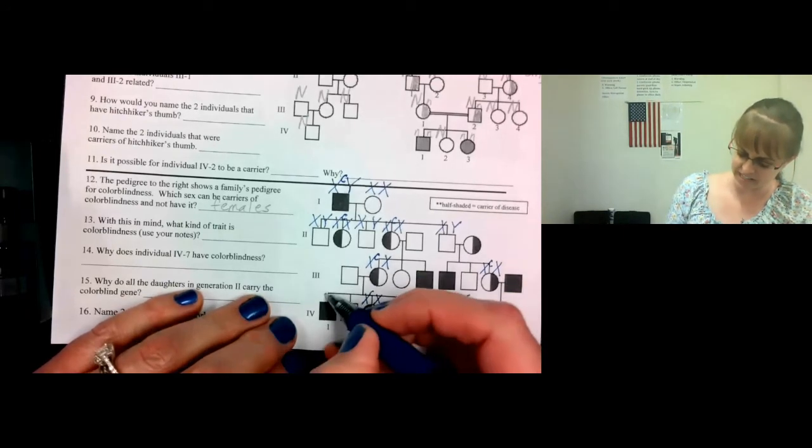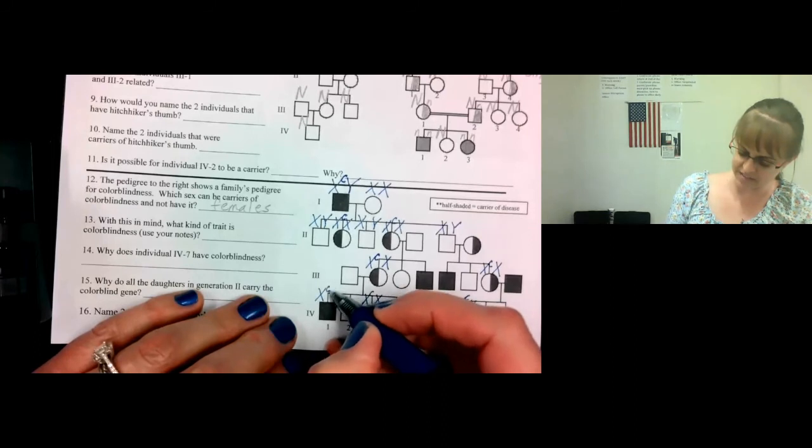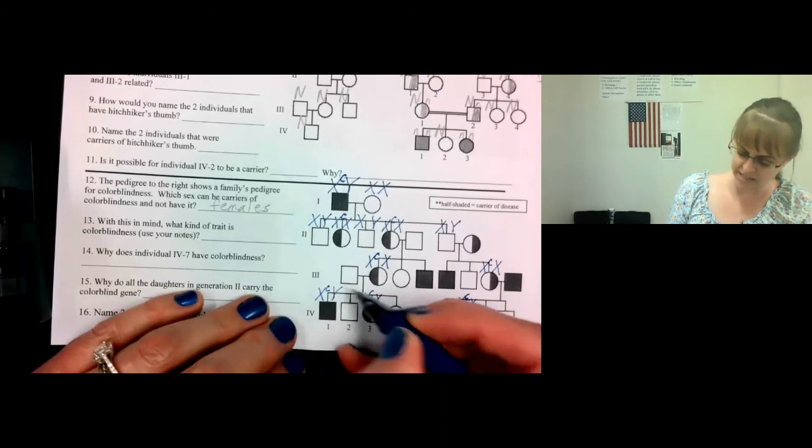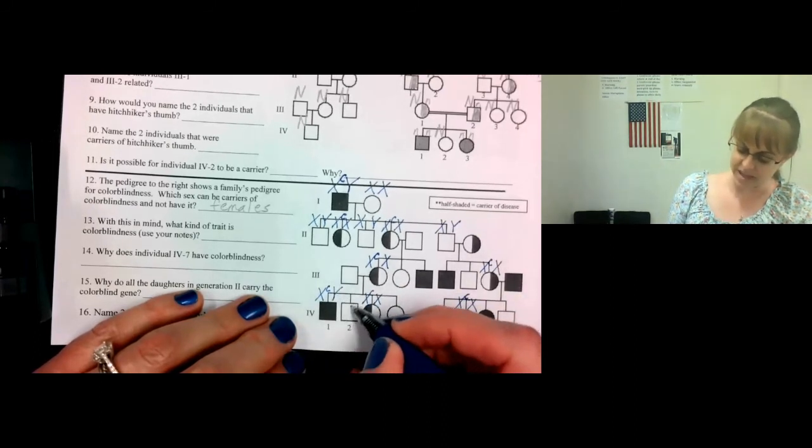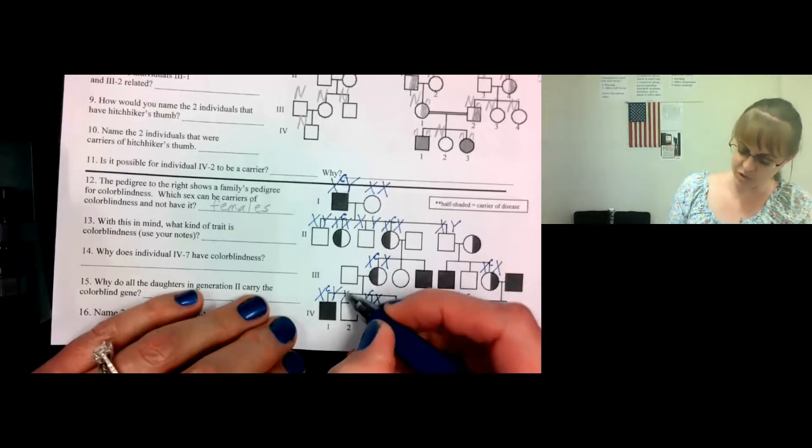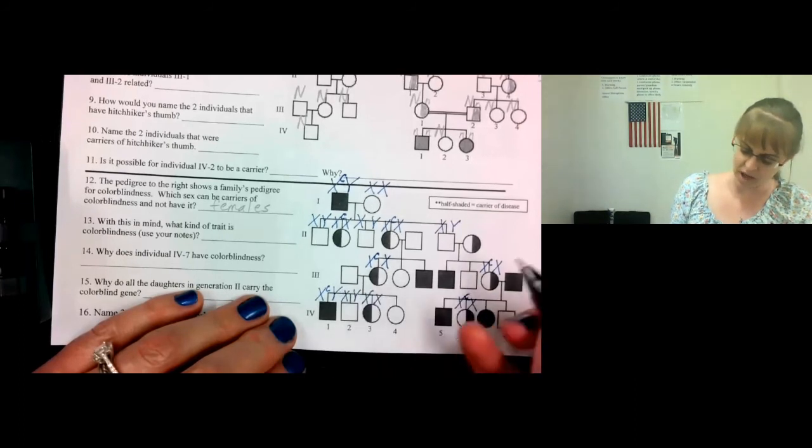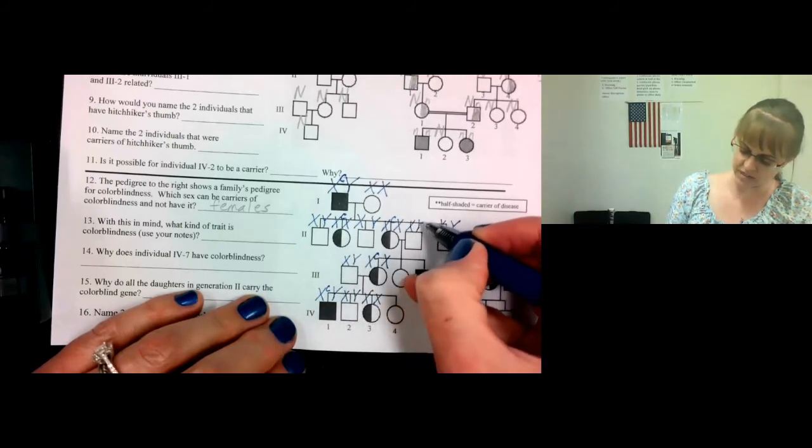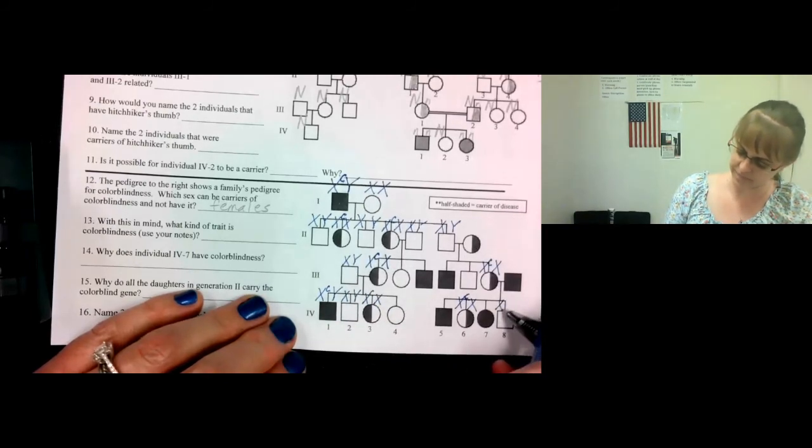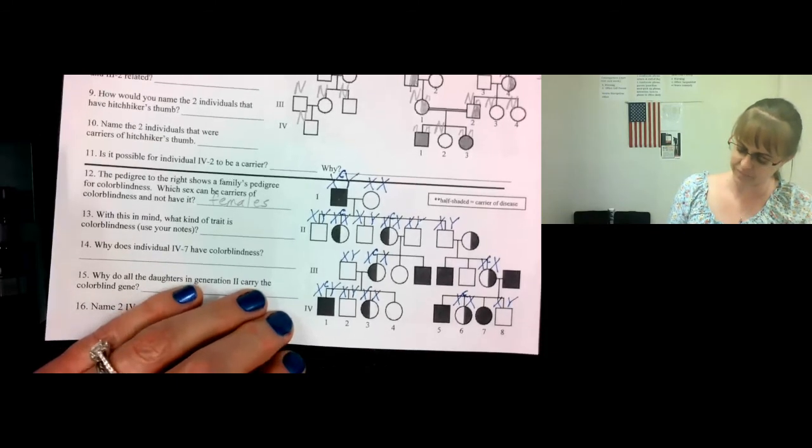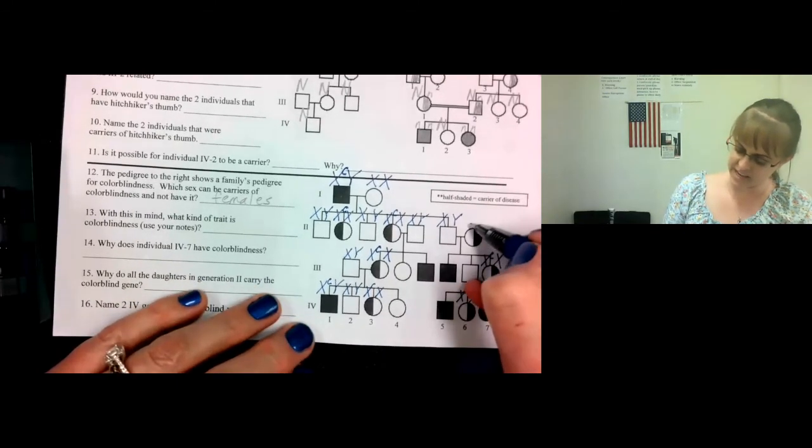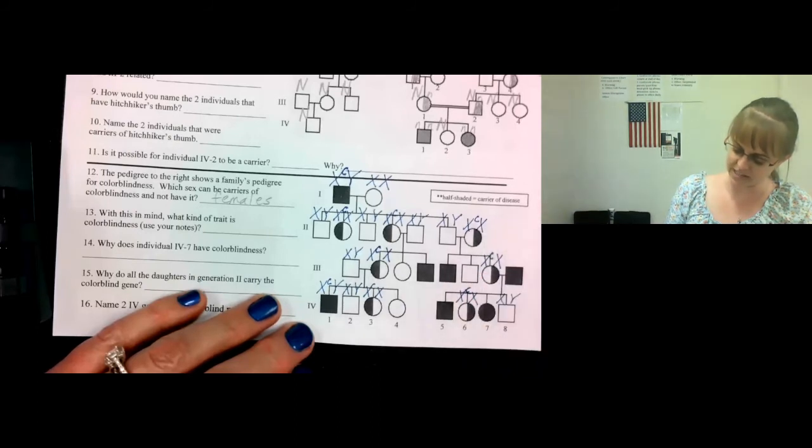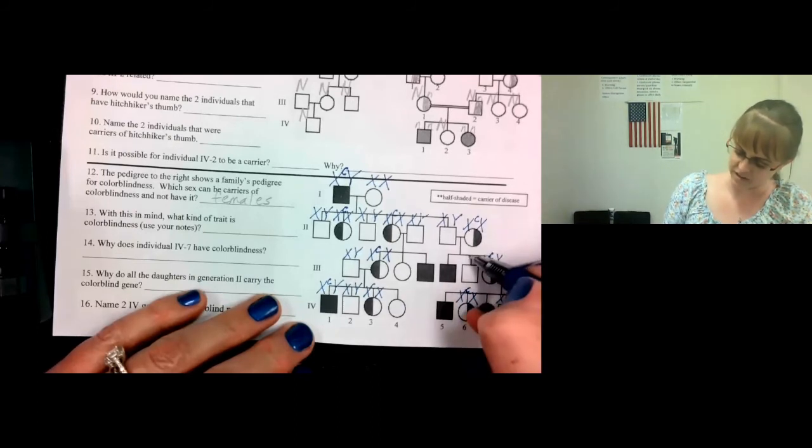This one has it. He has to have that recessive X and a Y, because he's a male. This male does not have it. He has to have a normal X and a Y. Normal X and Y, normal X and Y. This is a carrier. She has to have a recessive X and a normal X. Normal X, normal Y.